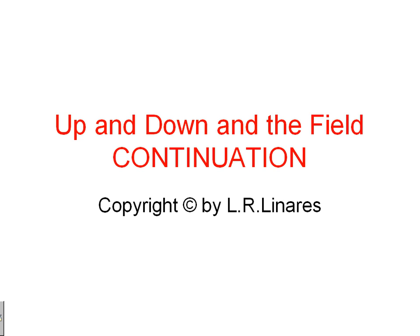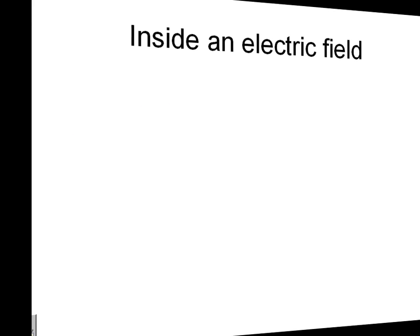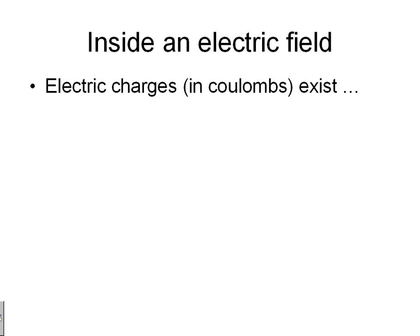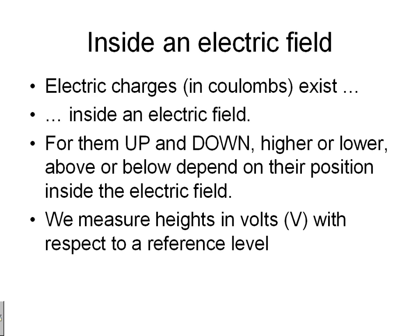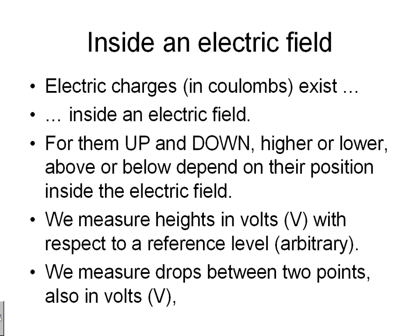This is the continuation of our lecture. Electric charges exist inside an electric field. For them, up and down, higher or lower, above or below — those are words that depend on where they are inside the electric field. We measure electric heights not in meters; we measure them in volts, V, with respect to a reference level that is completely arbitrary. We measure drops between two points also in volts — the difference in electric heights. The drop from A to B is the height of A in volts minus the height of B in volts.